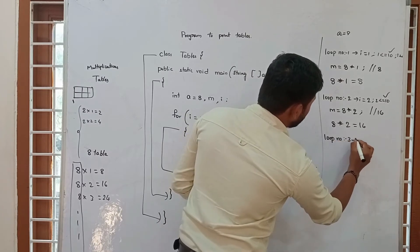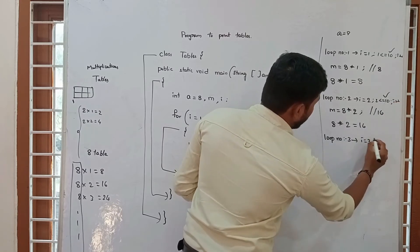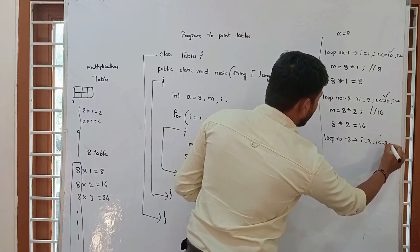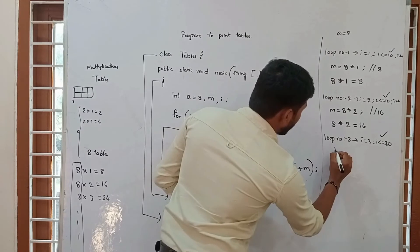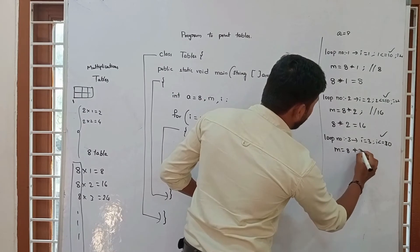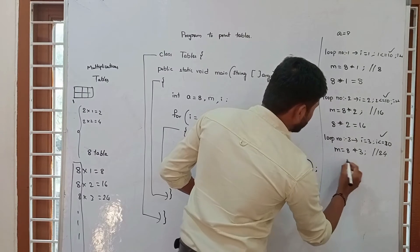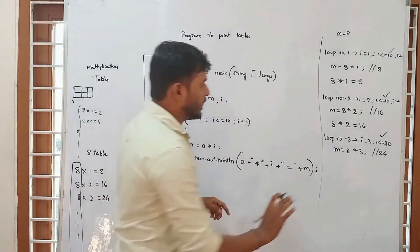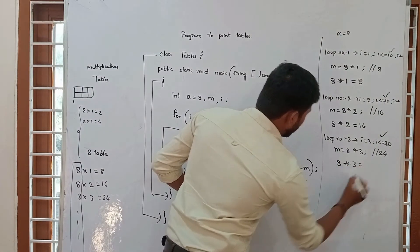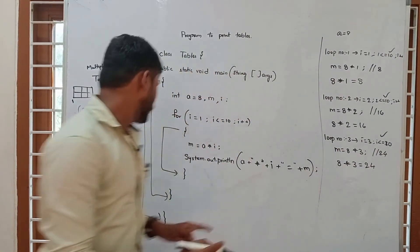In loop number 3, i equals 3 because of the increment i++, and 3 is less than or equal to 10, so condition is satisfied. Now m equals a into i — a is 8, i is 3 — so m will be 24. System.out.println prints: 8 * 3 = 24.